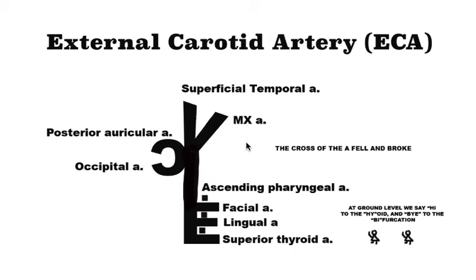Hey YouTube, I got this really cool mnemonic for the external carotid artery. You can kind of see what I'm doing here — I've taken the first letters ECA and arranged them in this kind of weird format. So here's the E, here's the C, it's a little backwards, here's the A, but the A has fallen and broken and it's forming another branch. If you basically draw this out, you should remember the basic layout of this artery.